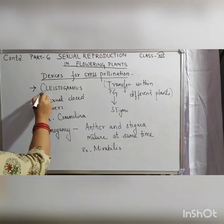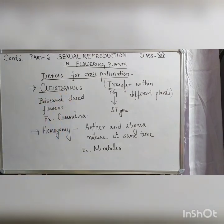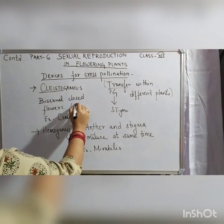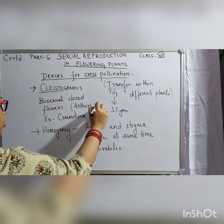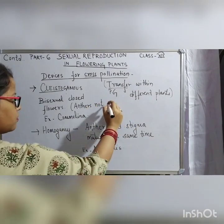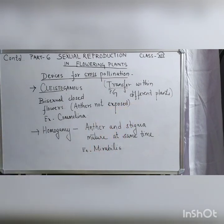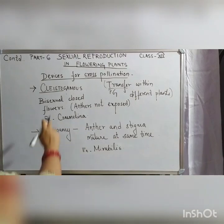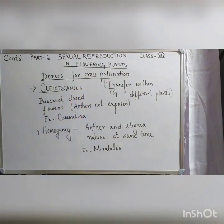Cleistogamy — 'cleisto' means closed. These are bisexual closed flowers. Cleistogamous plants have bisexual flowers but they never open up, meaning the anthers are never exposed. Closed flowers means anthers are not exposed. The example to remember is Commelina. So cleistogamous flowers, where anthers are not exposed, are the best example where cross pollination can take place.